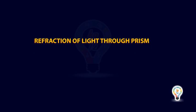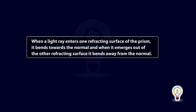Refraction of light through prism. When a light ray enters one refracting surface of the prism, it bends towards the normal and when it emerges out of the other refracting surface, it bends away from the normal.